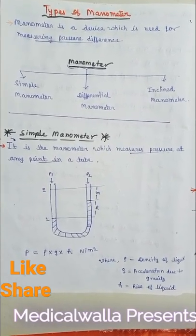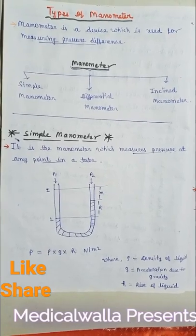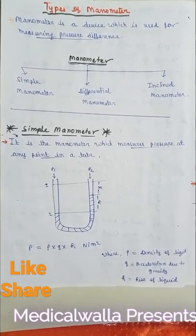Simple manometer: it is a manometer which measures the pressure at any point in a tube. At any point, it can measure the pressure.